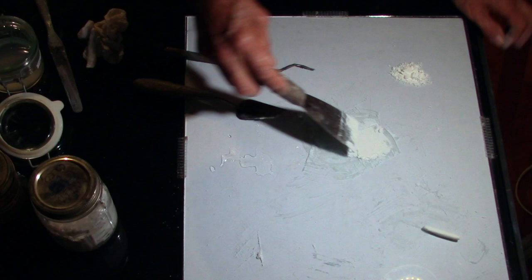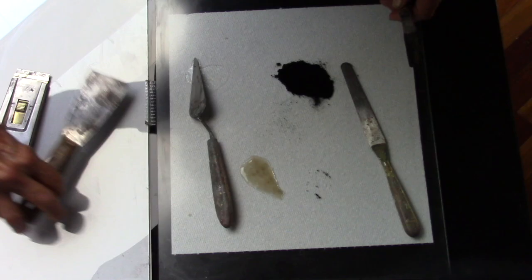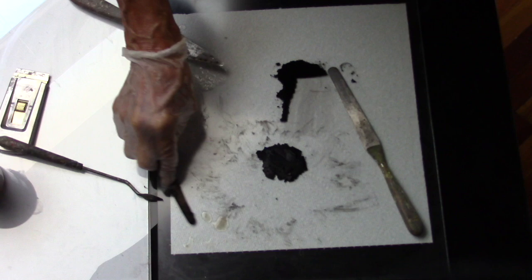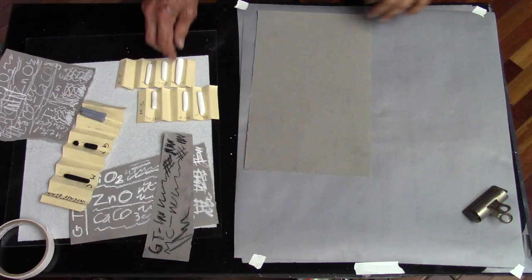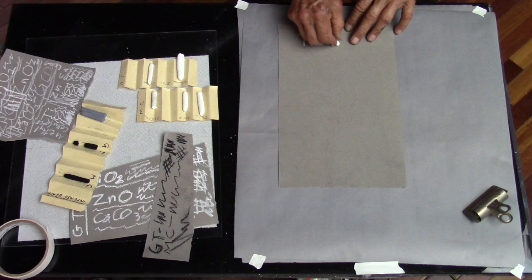It's the same process when you use methylcellulose as a binder to make the same three white pigments: titanium, zinc, and calcium carbonate. In addition to the whites, I've made two sticks of carbon black, one with methylcellulose and one with gum tragacanth. Pastels are dry and ready to try out.